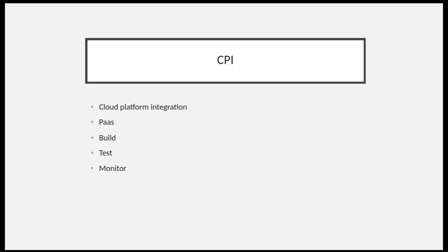In CPI you can design, develop, and monitor integrations. In CPQ the software is already built and you are just using it for your business purpose. But in CPI you can integrate multiple systems and develop or design your own integration with any other system — whether it's CPQ, ERP, or CRM — whether it's on-premise or cloud-based, SAP or non-SAP.